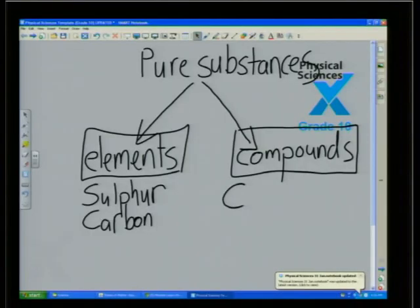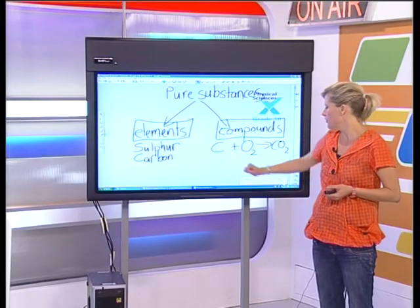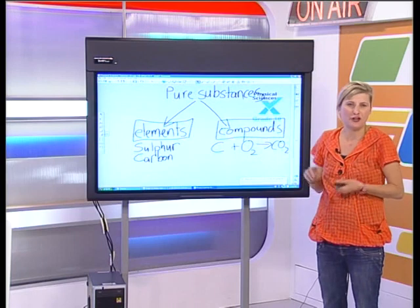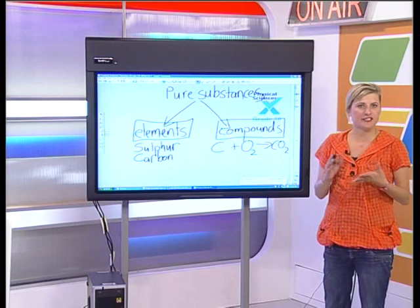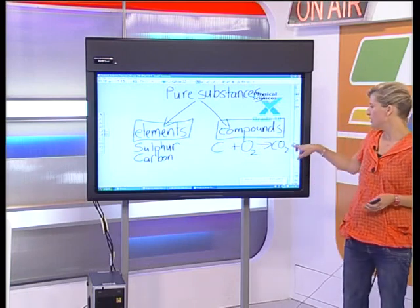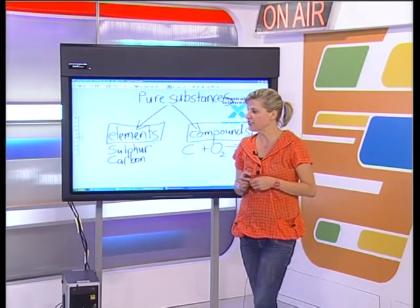If two or more chemicals react together to form a compound, there's a chemical reaction and the properties of that compound are completely different from the elements it's made up of. For example, if I react carbon with oxygen to give me carbon dioxide — CO₂ — which is what gives us the bubbles in fizzy drinks — the properties of CO₂ are completely different from those of carbon and oxygen.